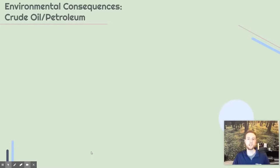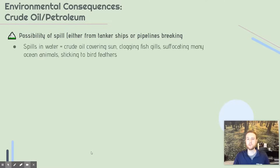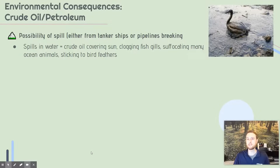Next, we'll cover some environmental consequences of petroleum extraction. The first is the possibility of a spill — either from a tanker or ship transporting petroleum from the ocean onto land, or a pipeline carrying it across land. In the ocean, petroleum can cover the surface of the water, block the sun and decrease photosynthesis, clog fish and suffocate many organisms, and stick to the feathers of birds.